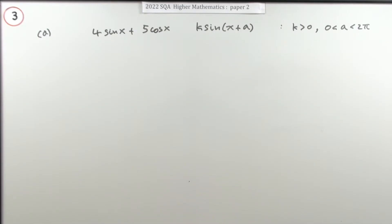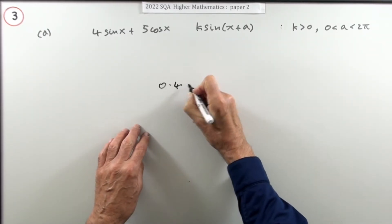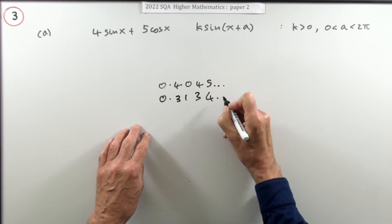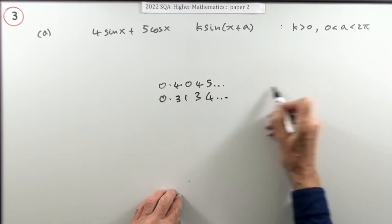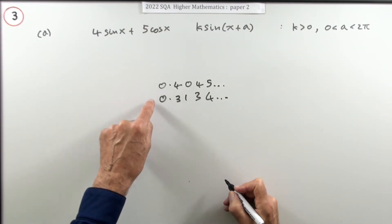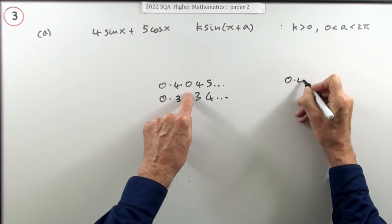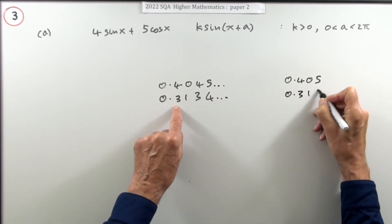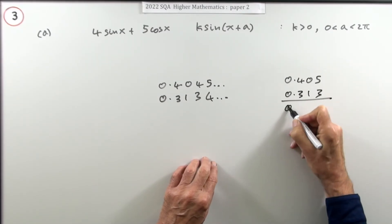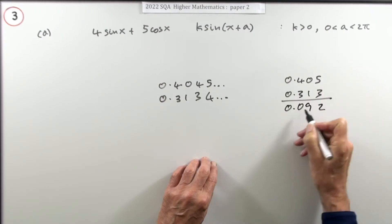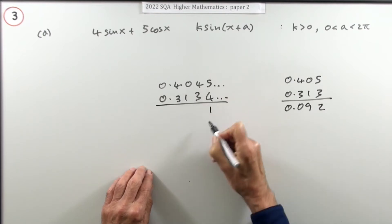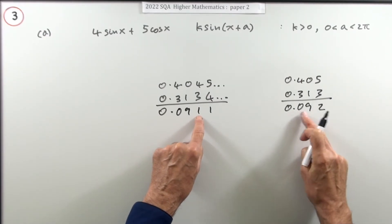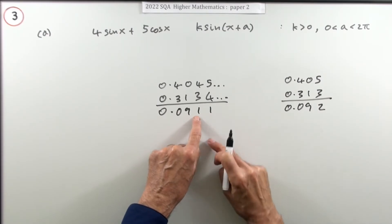You have to watch out for rounding errors. Take two numbers: say 0.4045... and 0.3134... — those ellipses mean they're still exact and haven't been rounded. If you write them down rounded to three significant figures, that's 0.405 and 0.313. Subtract those and you get 0.092, but the exact subtraction gives 0.091 — that's a rounding error.